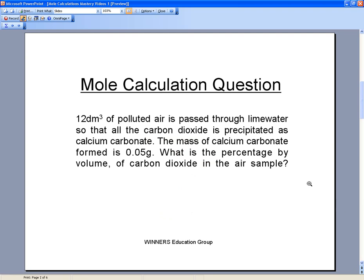12 dm3 of polluted air is passed through limewater so that all the carbon dioxide is precipitated as calcium carbonate. The mass of calcium carbonate formed is 0.05 grams. What is the percentage by volume of carbon dioxide in the air sample?